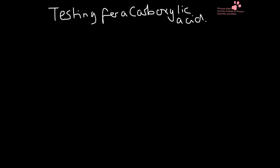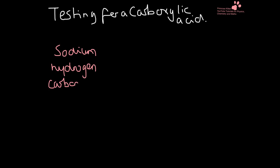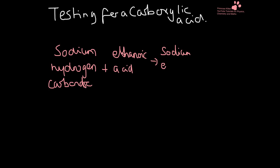So when we tested for the carboxylic acid we had sodium hydrogen carbonates. We added ethanoic acid and the things that were produced were sodium ethanoate plus water plus carbon dioxide.